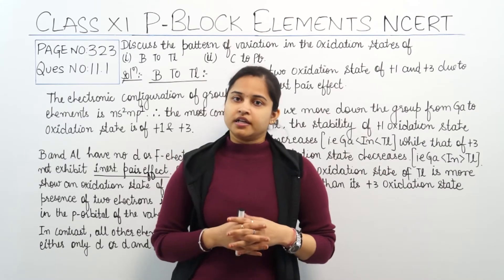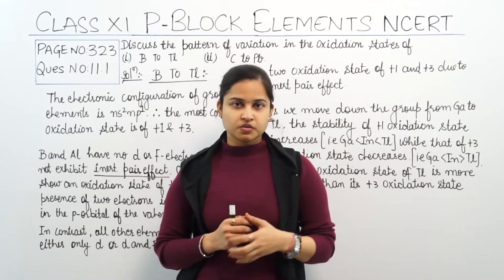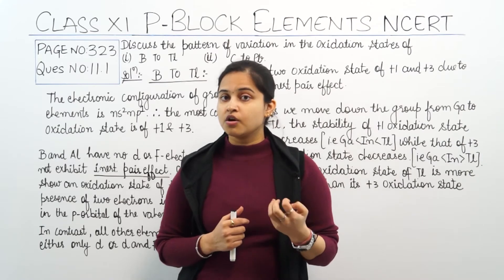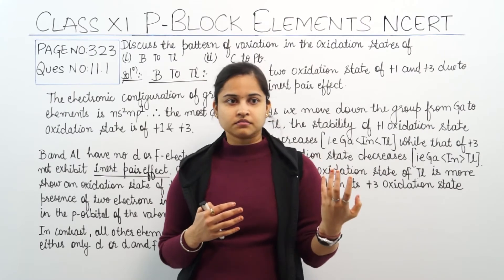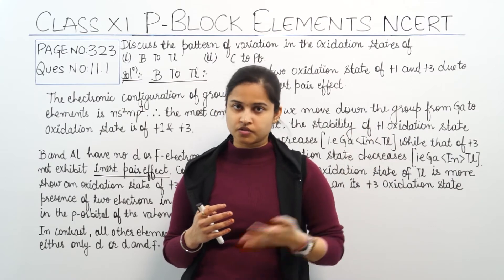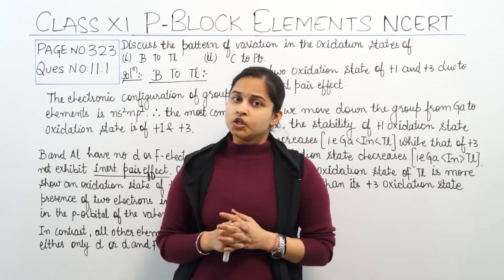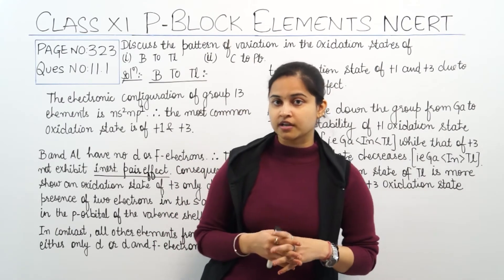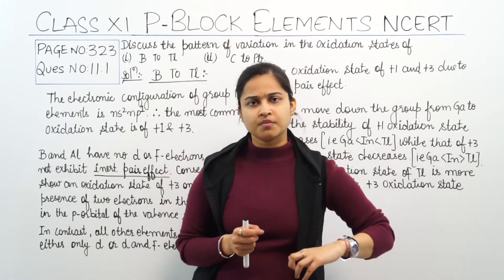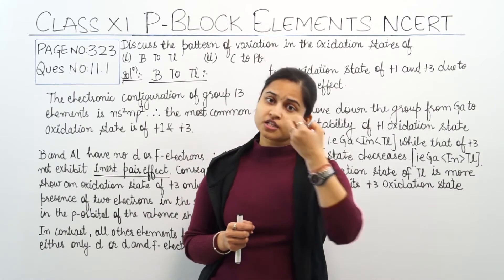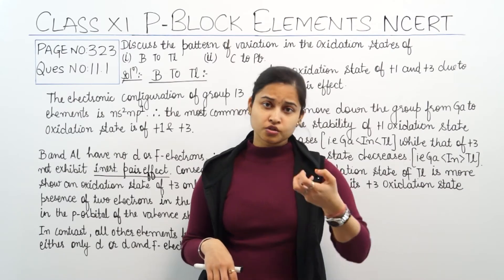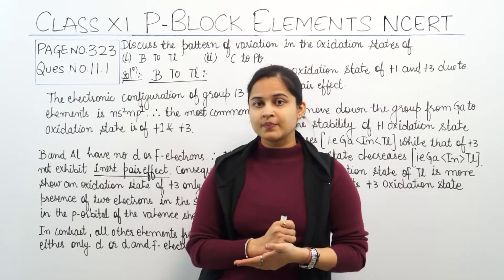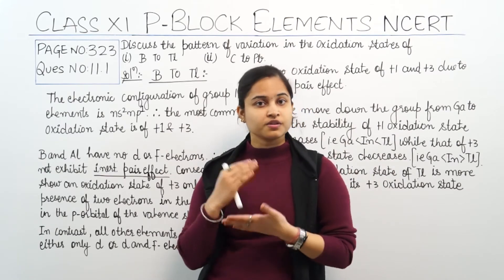Because of the valence shell electrons, they get attracted towards the nucleus. As we go down the boron family, effective nuclear charge increases after aluminium due to ineffective shielding from intervening D or F electrons. The S orbital electrons will not be easily lost because of the increased effective nuclear charge. The electrons won't be unpaired and will not participate in bond formation — this whole process is called the inert pair effect.